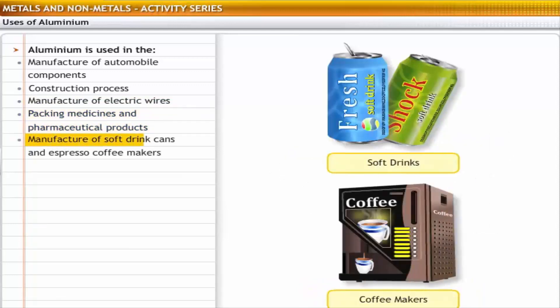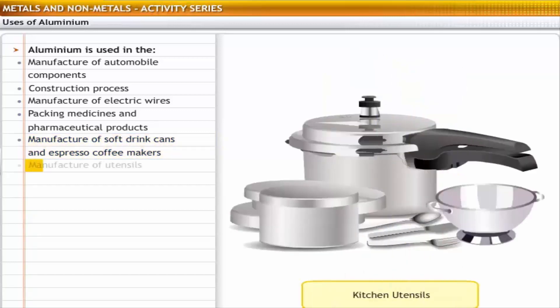It is used in the manufacture of soft drink cans and espresso coffee makers because it does not rust and is relatively less toxic. It is also used in the manufacture of kitchen utensils because aluminium is a good conductor of heat.